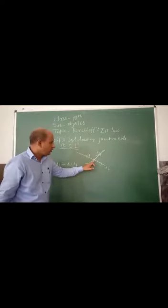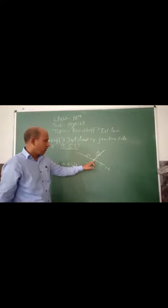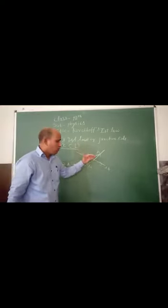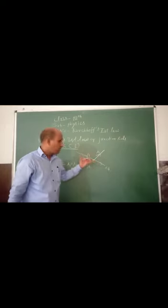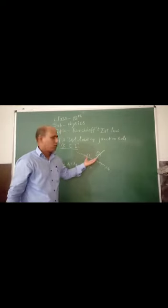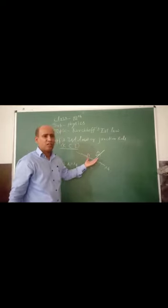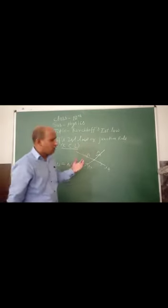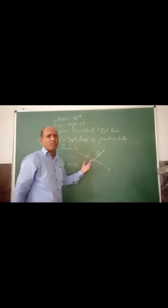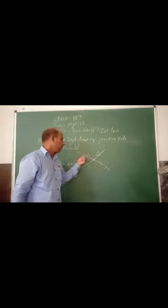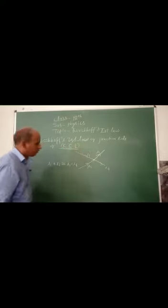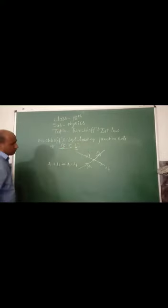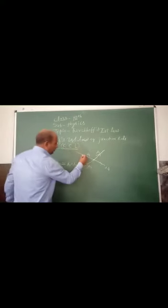The junction rule applies to any junction where 3 or more currents meet — that is, where there are 3 or more conductors or wires. We use the junction rule when there are 4 wires, with 2 wires carrying current in and 2 wires carrying current out.